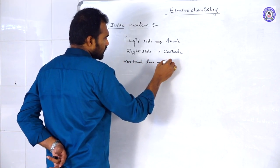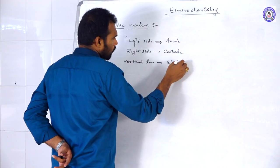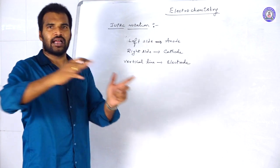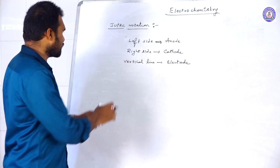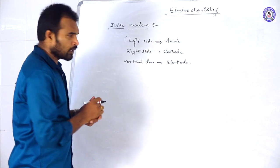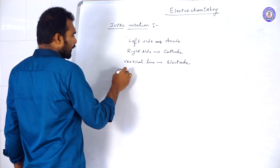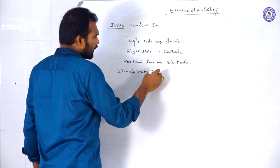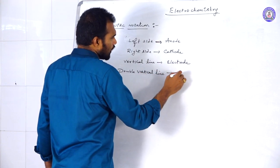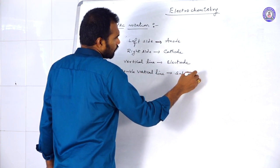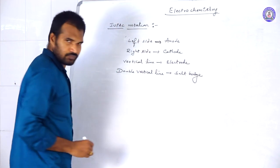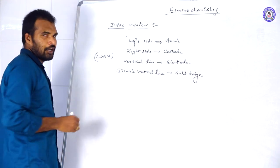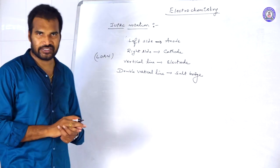A single vertical line represents the electrode or phase transition, and a double vertical line represents a salt bridge. Just remember the mnemonic L-O-A-L-O-M while writing the IUPAC annotation.